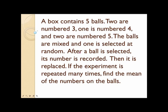Let's have an example. Suppose that a box contains five balls: two are numbered three, one is numbered four, and two balls are numbered five. The balls are mixed and one is selected at random. After a ball is selected, its number is recorded, then it is replaced. If the experiment is repeated many times, find the mean, then the variance of the numbers on the balls.